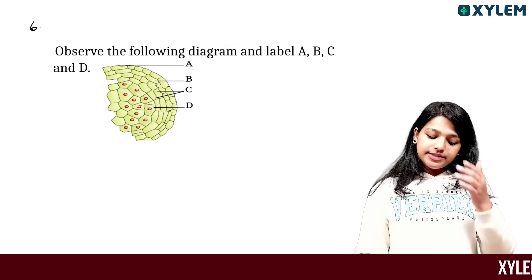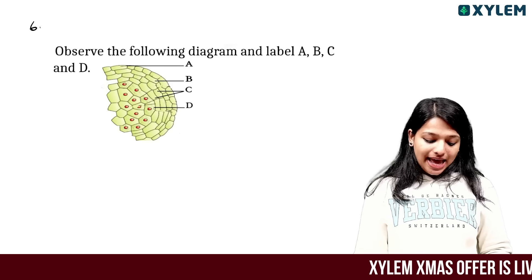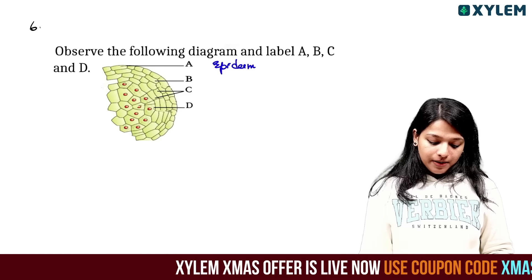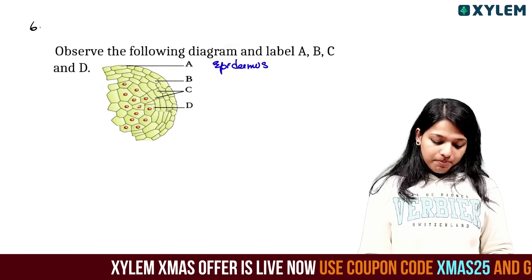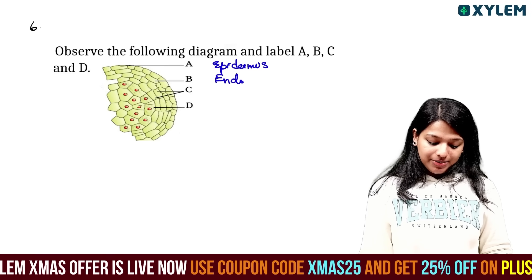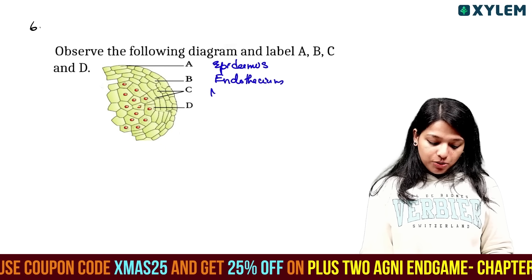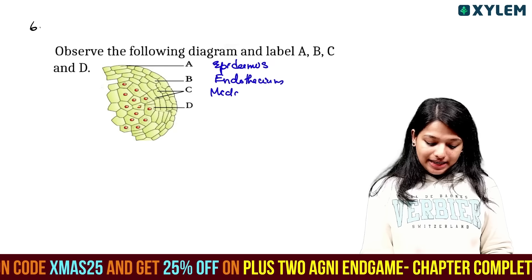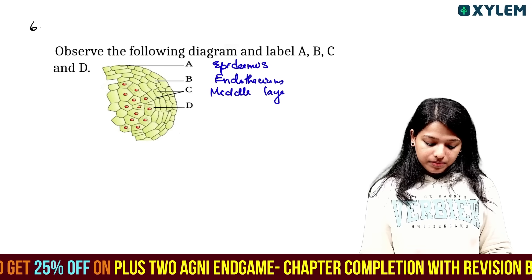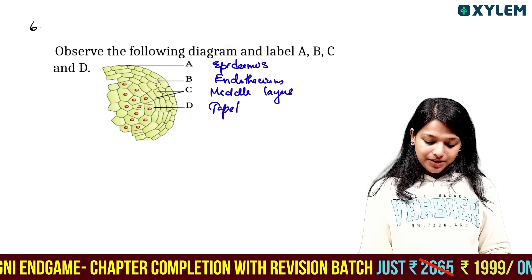Observe the wall diagram and label A, B, C, D. A is epidermis, B is endothecium, C is middle layers, D is tapetum.